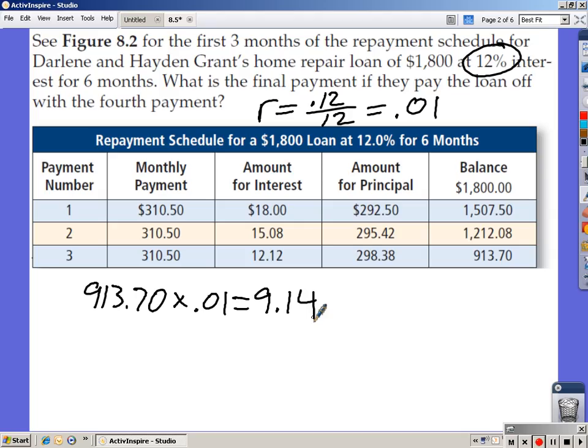Now, to find the final payment, all you've got to do is take the balance at the end of the third month, which is that 913.70, plus the interest that you just came up with of 9.14. Add those two together, you should end up with 922.84.